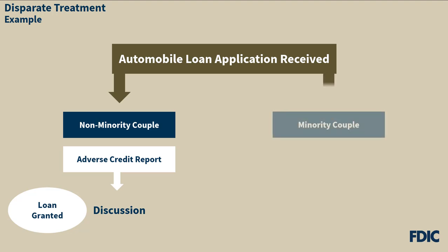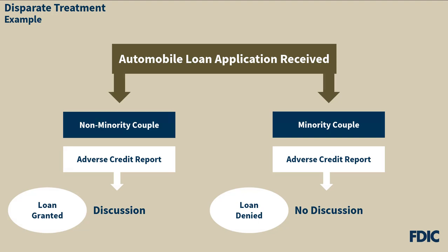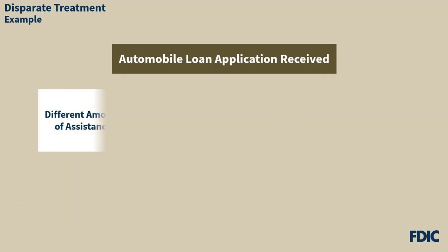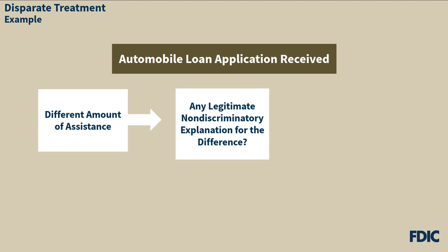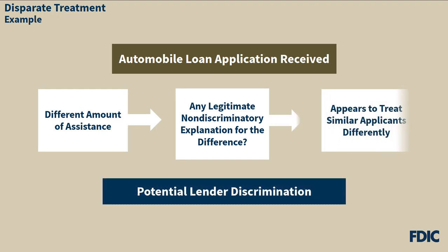A minority couple applied for a similar loan with the same lender. Upon discovering adverse information in the minority couple's credit report, the lender did not give the minority couple an opportunity to discuss the report and denied the loan application because of the adverse information. This is an example where the lender offered a different amount of assistance to each of the two couples. If the lender can offer no legitimate, non-discriminatory explanation for the difference in treatment, then the lender has potentially discriminated by treating similarly situated applicants differently on a prohibited basis.